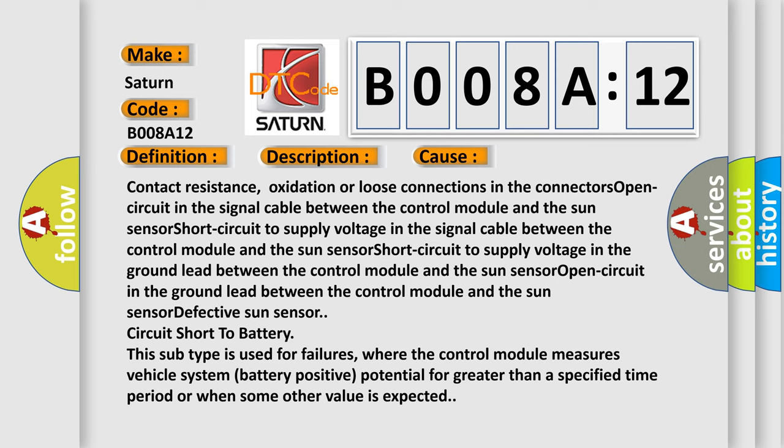Open circuit in the ground lead between the control module and the sun sensor, defective sun sensor, circuit short to battery.